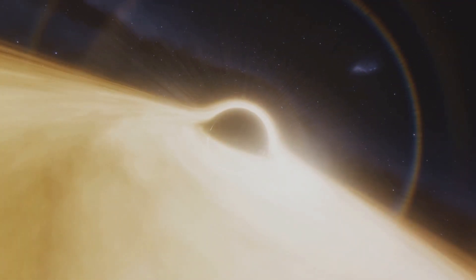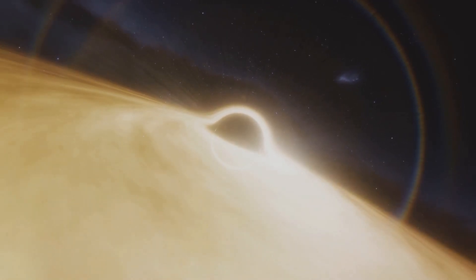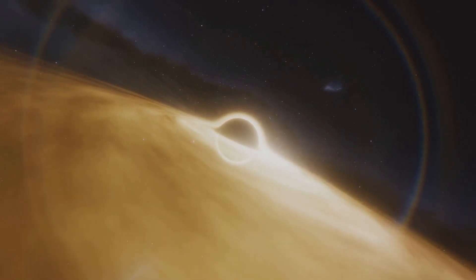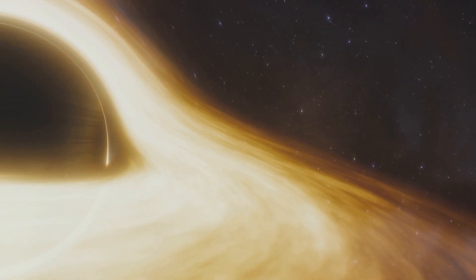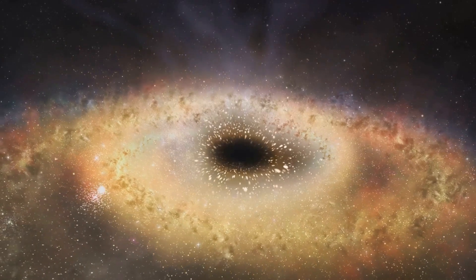However, this isn't a one-sided relationship. As these celestial bodies whirl around Sagittarius A asterisk, they also feed it. Gas clouds and even whole stars can be sucked into the black hole's maw, adding to its already colossal mass. This process, known as accretion, can cause the black hole to grow over time.